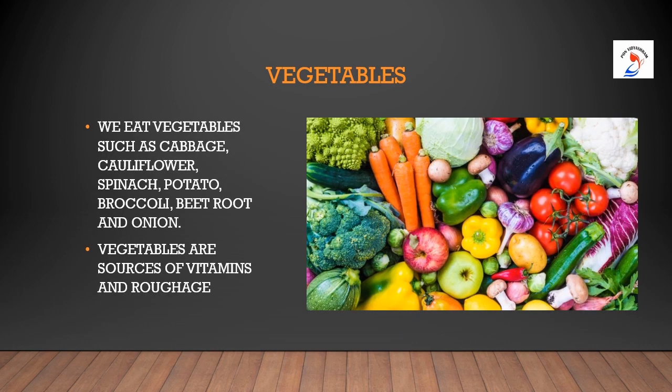Now we will talk about vegetables children. We eat many vegetables such as cabbage, cauliflower, spinach and potato. Vegetables are sources of vitamins and roughage. Vegetables are even called protective foods because they protect us from falling ill. Roughage is a fibrous material present in fruits and vegetables.